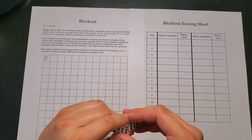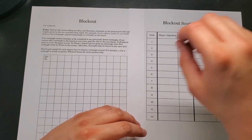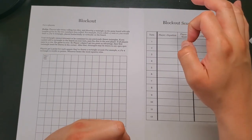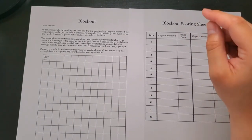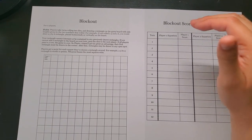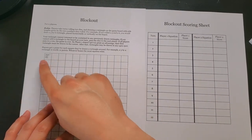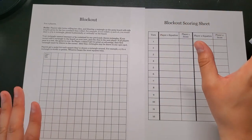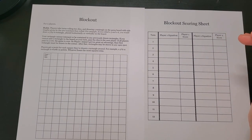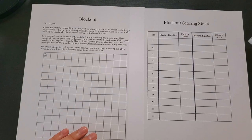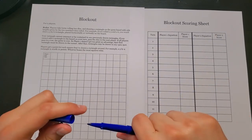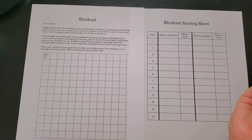Your rectangle cannot intersect or be contained in any previously drawn rectangle. If you cannot add a rectangle on your turn, pass the dice to the next player. If all players pass in a row, the game is over. So player one doesn't get too great an advantage, their first rectangle must be drawn in the corner. After that, rectangles can be placed anywhere. Players get a point for each square enclosed — a three-by-four rectangle is worth 12 points. Whoever boxes the most squares wins.